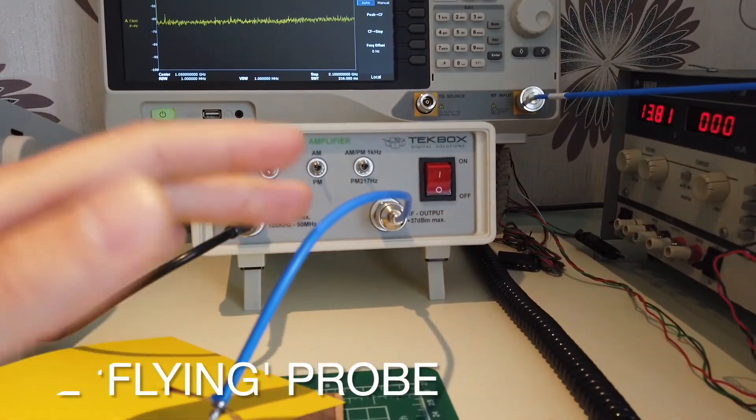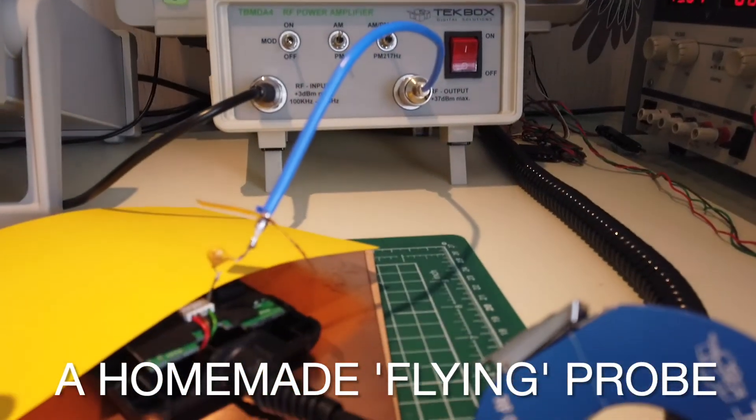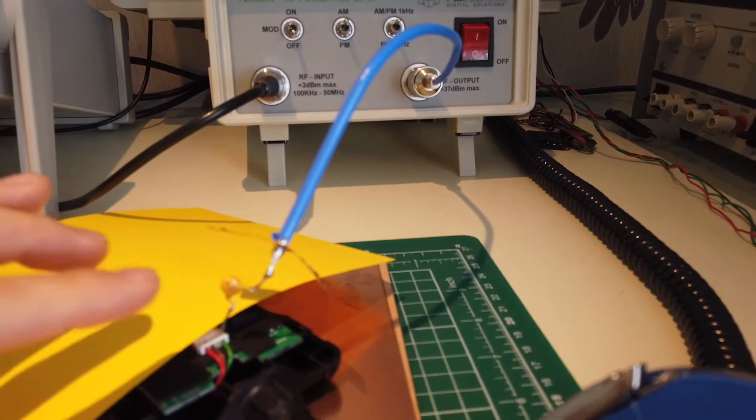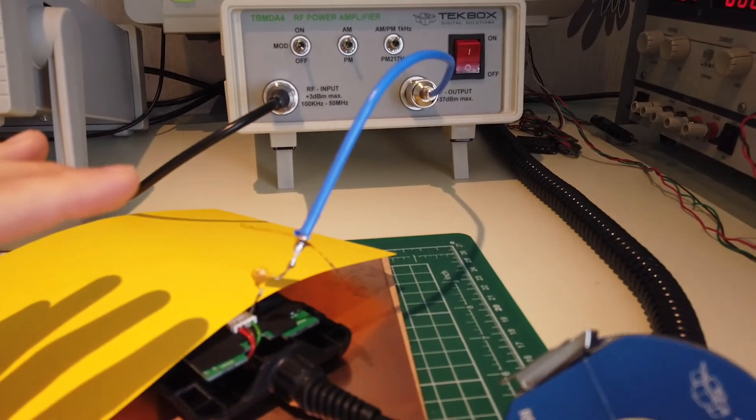The flying probe we already talked about, and now you can see it is connected to the green line, which is the LAN communication line of this module.